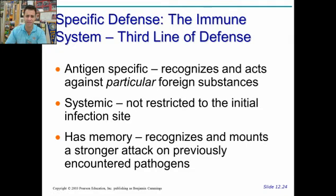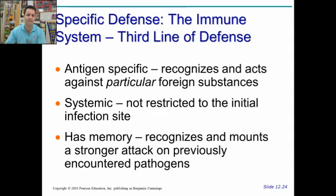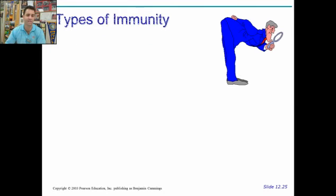Let's talk about the third line of defense. This is the specific defense of the immune system against the specific or particular antigen. This type of immunity spreads through the blood all throughout the body — so we say it's systemic — and it also has the ability to remember what a certain antigen looked like so that when you're exposed again, you can attack it very quickly and it won't get you sick.